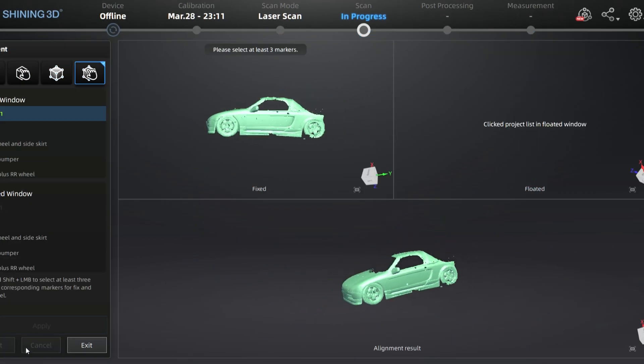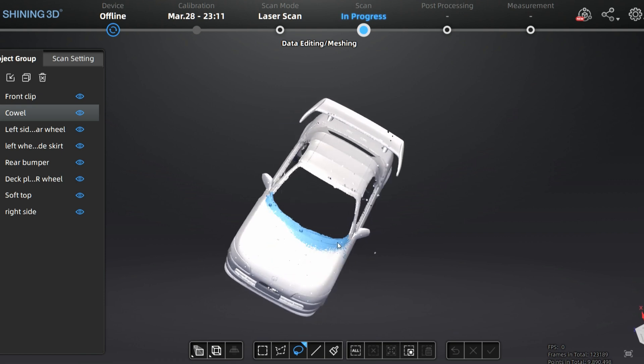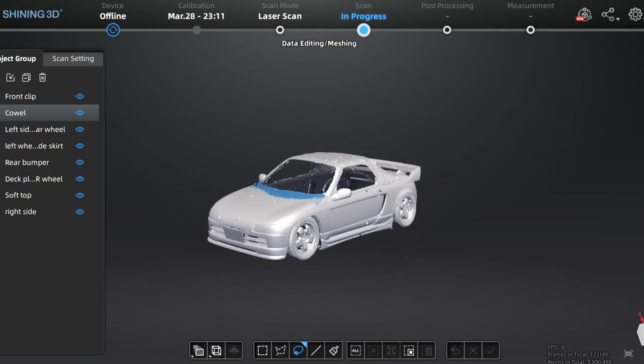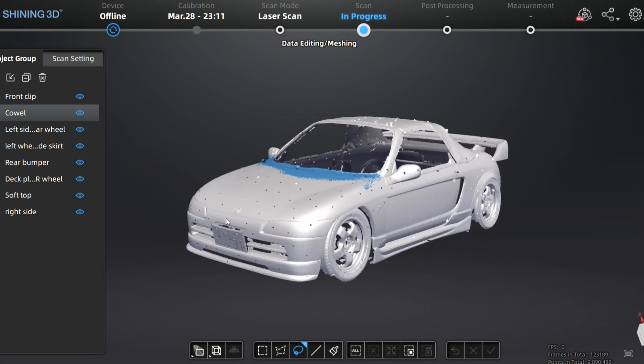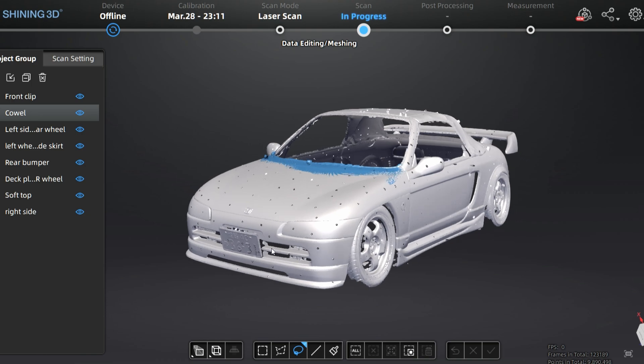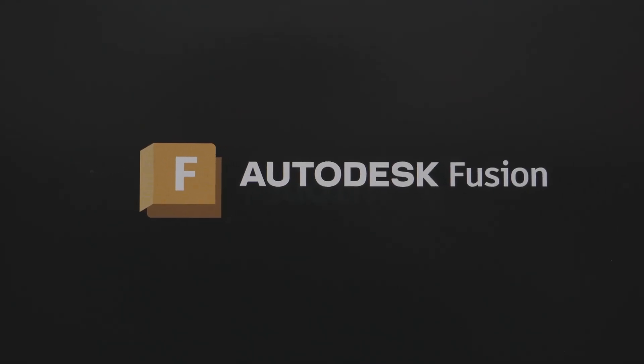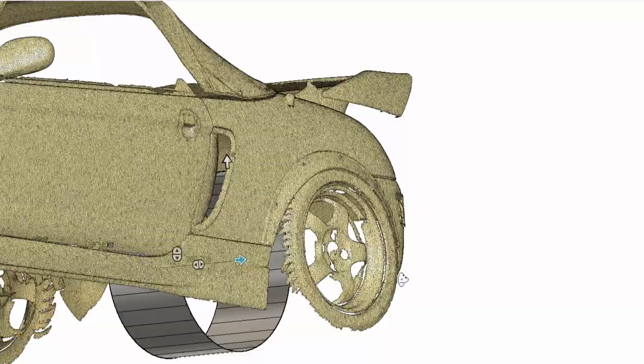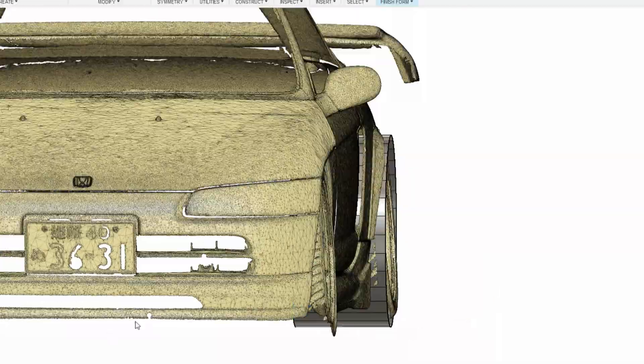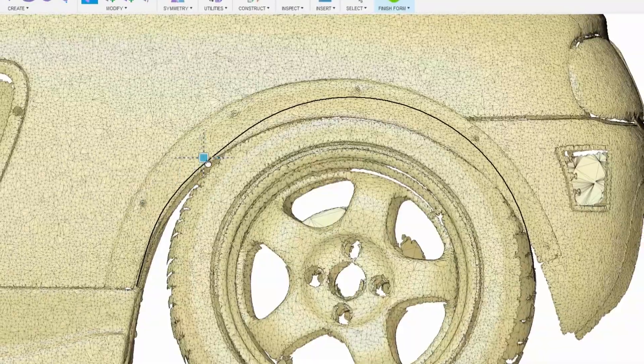A frequent question I get asked is, what 3D modeling software to use for designing car parts? And my answer is, try them all and choose whatever you like best. I use Autodesk Fusion because that's what I like, and it's free. I have the full version because I'm part of the Fusion Creators program, but the free version can do all of this.